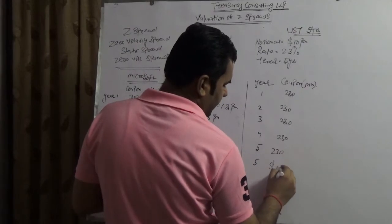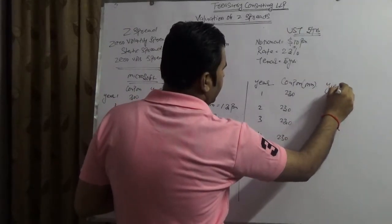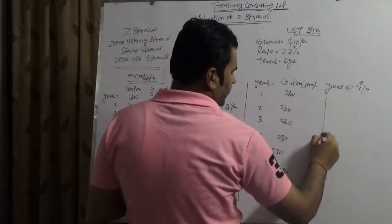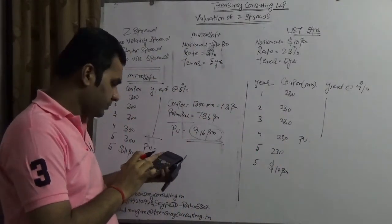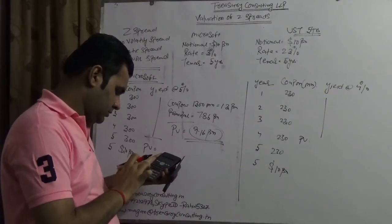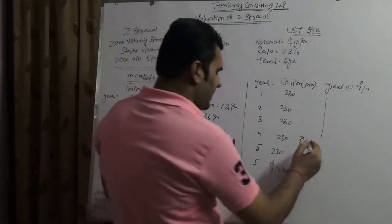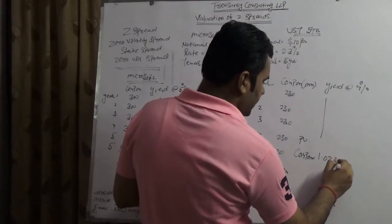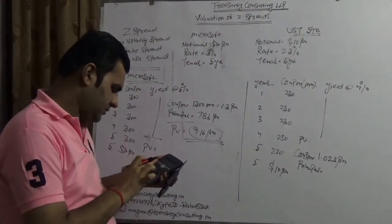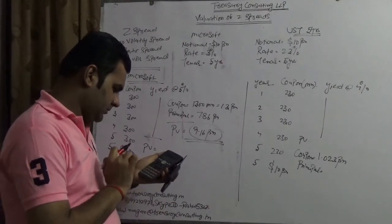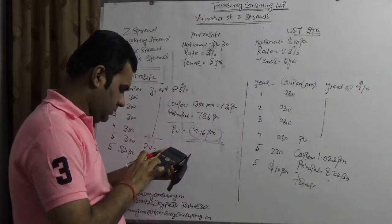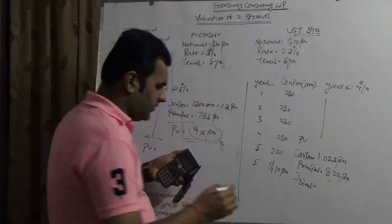Assuming ten billion is paid at the end. Since it is a UST, the yield won't be very high — assuming four percent. The coupon present value comes out to one point zero two three billion, while the principal present value comes to roughly eight point two two billion. So the total present value of the UST would be roughly nine point two four billion.